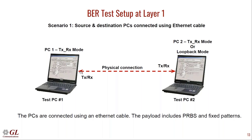For testing physical layer connectivity, we take one stream where the entire frame is made up of payload — pure BERT payload with no header fields from any layer. When this BERT payload runs on the physical connection and loops back, or if both PCs are in TX/RX mode, each can send and receive traffic, analyze the BERT traffic, and generate statistics — whether there's any BERT error, at what rate errors are observed, how many packets were sent, and whether there's any packet loss.